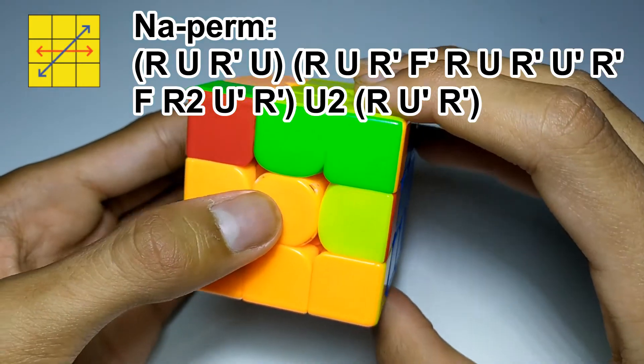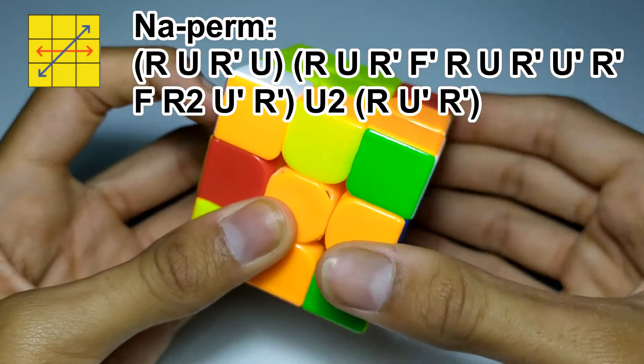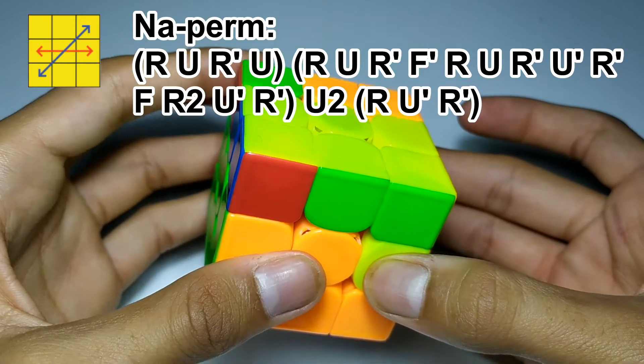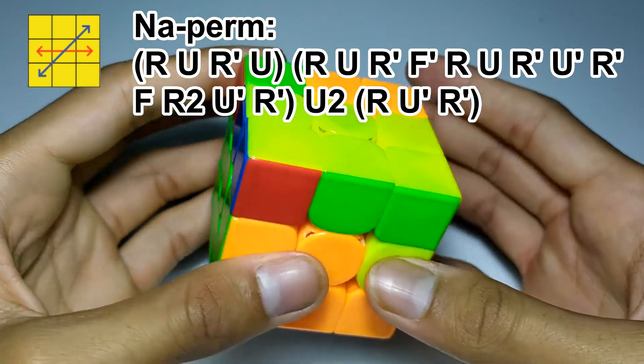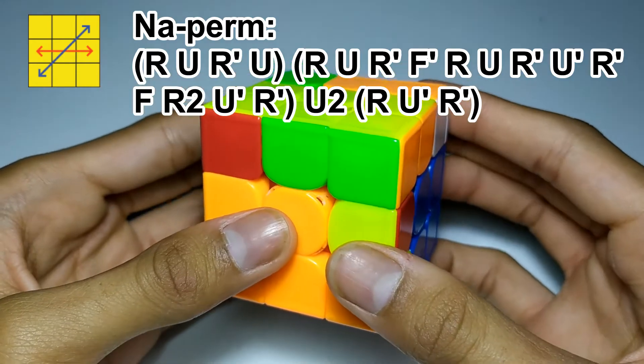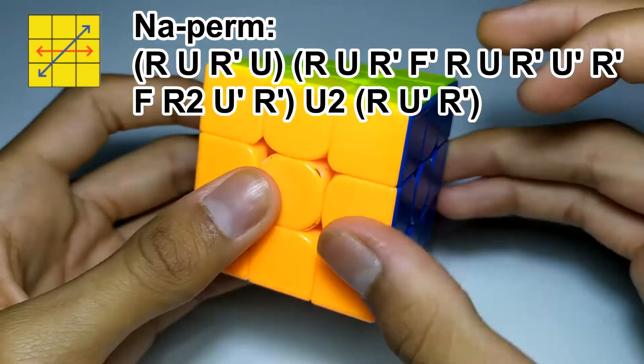Then the J-B-perm, the more basic way, with a re-grip. And then instead of the U' at the end, we do a U2 with either your left or your right. I prefer right because I find it easier to do with my right. And then R, U', R'.